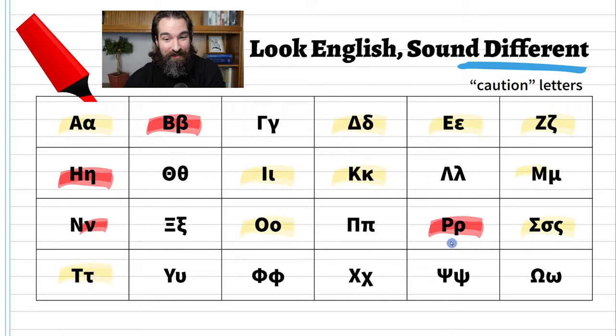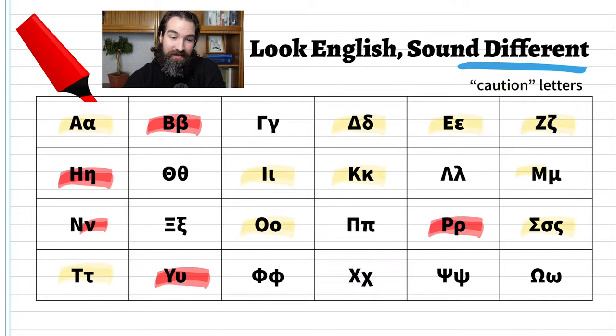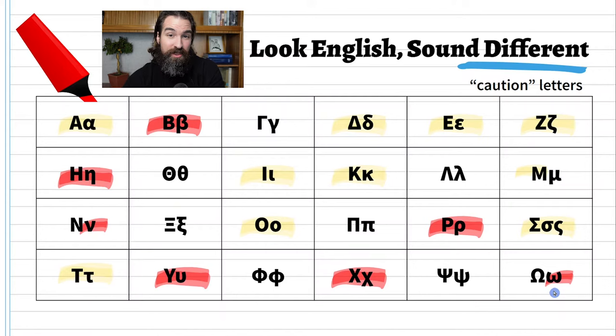The letter that looks exactly like a P is actually the R sound in Greek — it's called rho. The Y-looking thing paired with a lowercase U is a long E sound, a vowel called ypsilon. The X is more like an H in Greek, it's called chi. And at the end, that lowercase w is another vowel — an O sound — called omega.